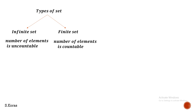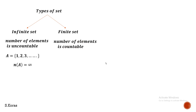For an infinite set, consider: A = {1, 2, 3, ...} — it goes on, so we cannot count the elements. Its cardinal number N(A) = infinity. For a finite set, consider A = {1, 2, 3} — no dots, only three elements, so N(A) = 3.